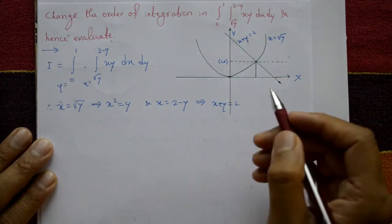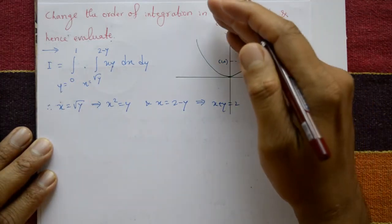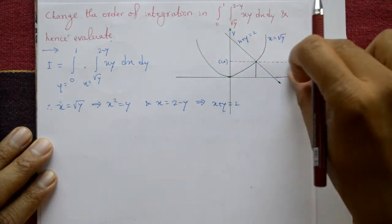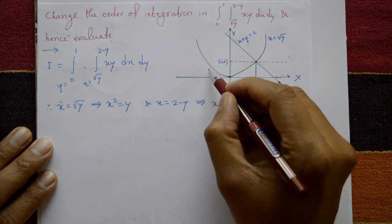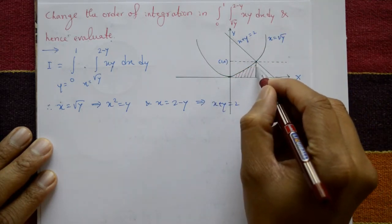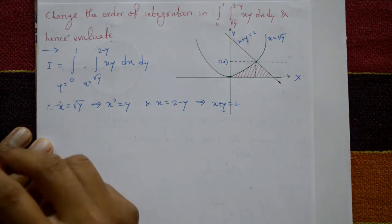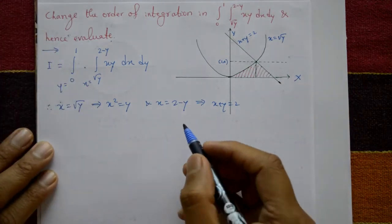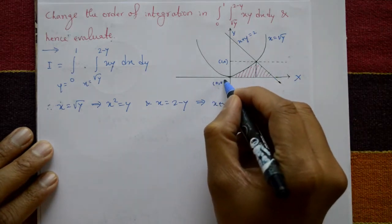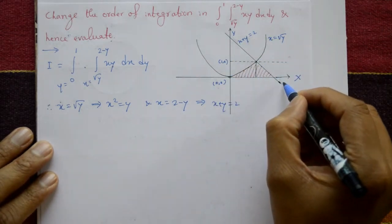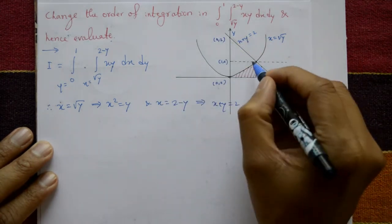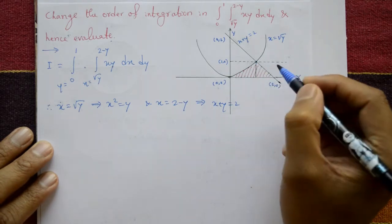The common area is bounded by x + y = 2, y = 0, and the parabola equation. We need to find this area. The origin is here; x + y = 2 gives points (2, 0) and (0, 2). Now find the point of intersection.